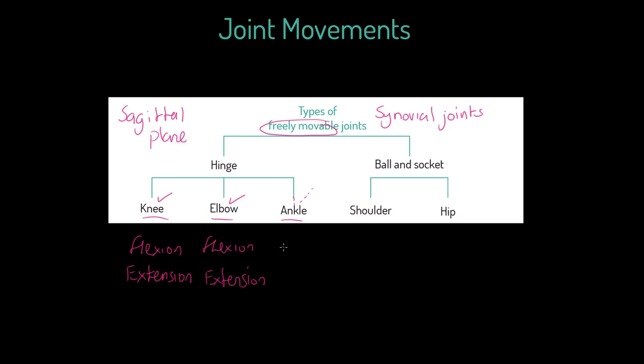In the ankle we have something called plantar flexion, which by the way is two words, not one, and we have something called dorsiflexion. Both of those are forms of flexion. Plantar flexion is when a person points their toes downwards. Think about a ballerina gathering tension in the legs to maybe be on point when they're doing those sorts of moves.